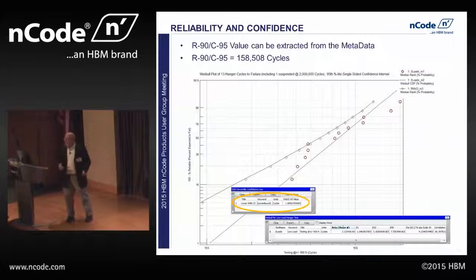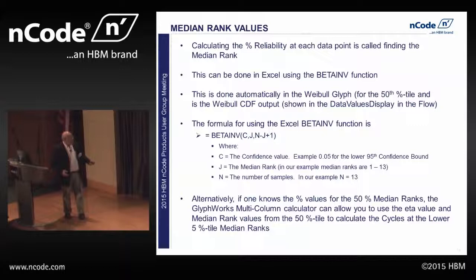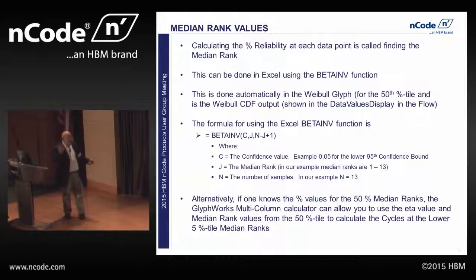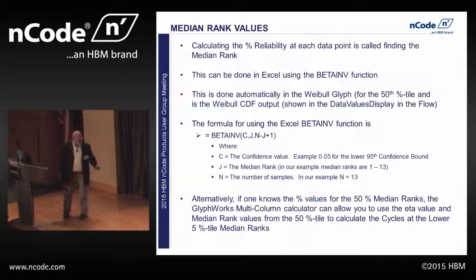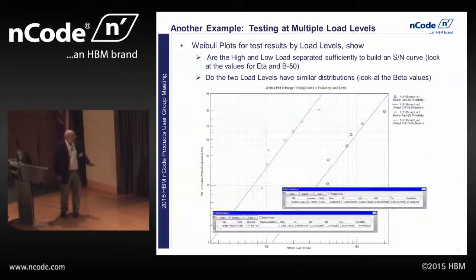Calculating the percent reliability point at each point is called finding the median rank. You can do this in Excel with the beta inverse function — use the confidence value and the median rank. Those values vary from 1 to N; in this example with 13 parts, you'd put 13 in. If I wanted to know the fourth median rank, I'd put 0.05, 4, and then 13 minus 4 plus 1. Alternatively, if you know the 50% median rank — which the Glyphworks calculator calculated — you can then go into the Glyphworks multi-column calculator and calculate it for any other median rank, say the 5% one.